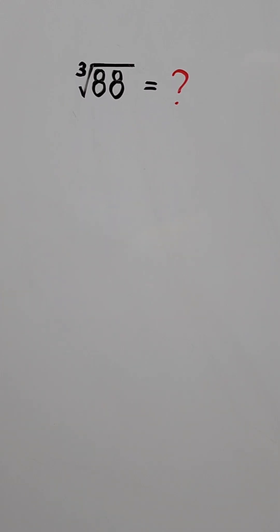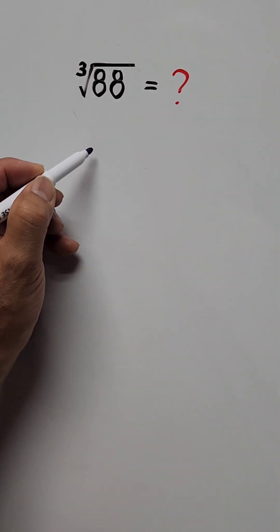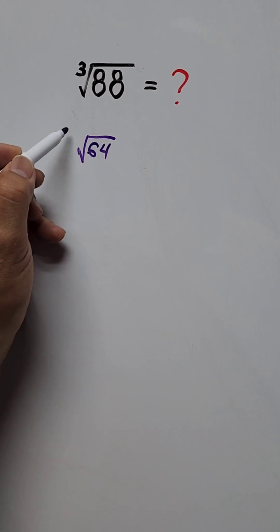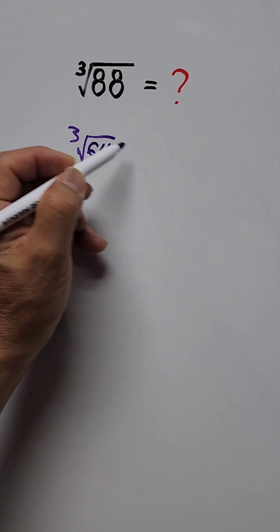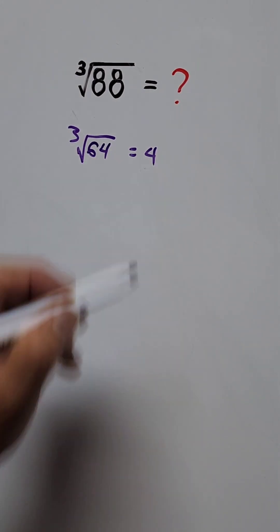To find the cube root of 88, we need to find the base perfect cube of a number. The nearest perfect cube is 64, and the cube root of 64 is 4.